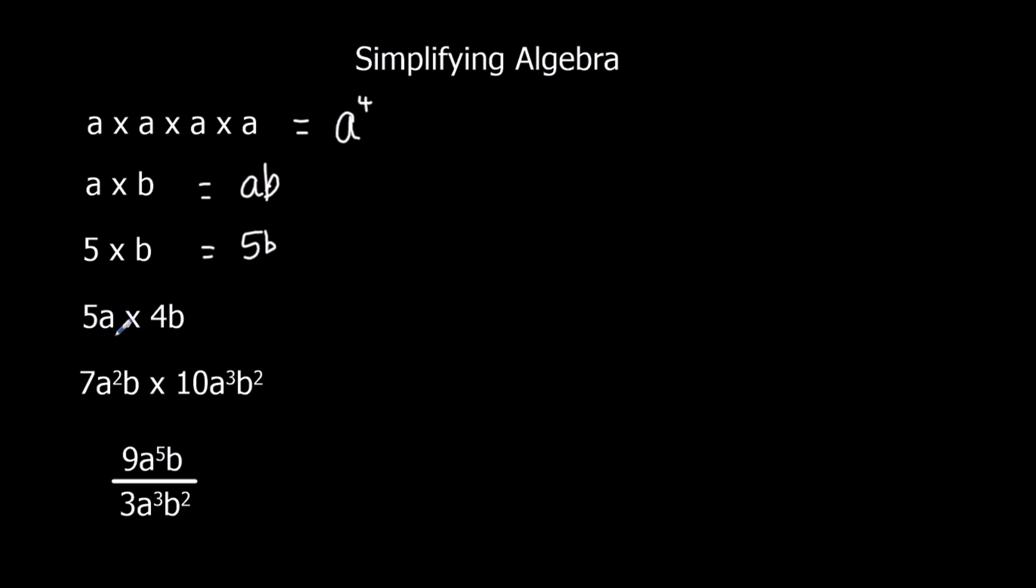So here I've got 5a times 4b. 5 times 4, the two numbers we can multiply together. So 5 times 4 is 20. And we've also got an a and a b. So it's 20 times a times b. We write that as 20ab.